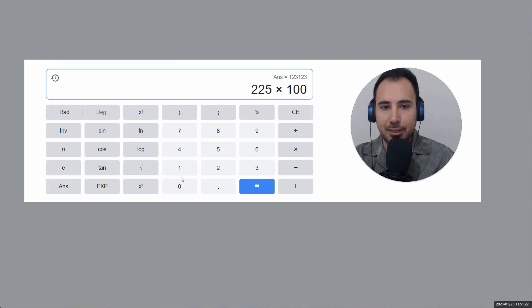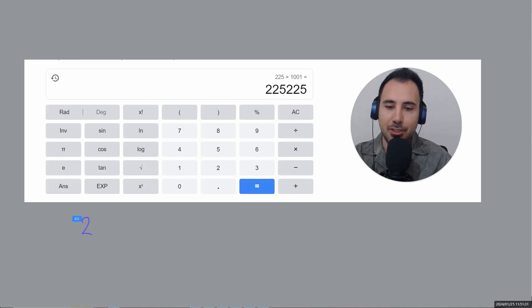One two three, one two three. Let's do it with a different number. If I go with two two five multiplied by a thousand and one, I get two two five and two two five. And the reason for this is actually simple. It's not like magic, it's just...